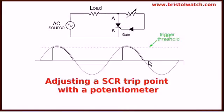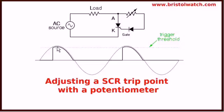Now I have inserted a variable resistor or potentiometer to replace the switch. As I adjust the resistance on the pot, I change the amount of current that gets to the gate. When the sine wave voltage climbs high enough, we hit what is called the trigger threshold or breakover voltage. From then on, it will conduct and continue to do so until the sine wave goes back to zero. Note that once the SCR is turned on, it will continue to conduct until you either break the current path or the AC sine wave goes to zero.